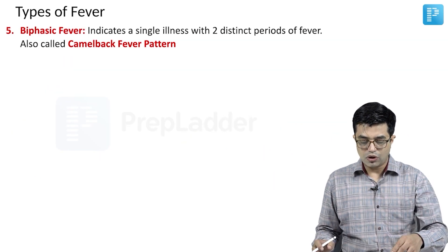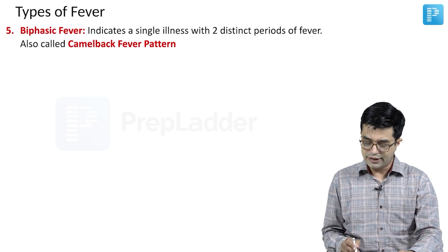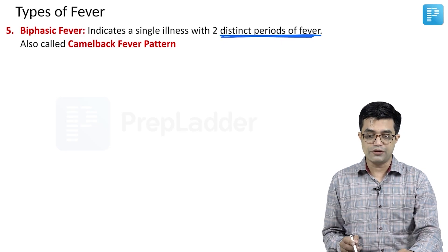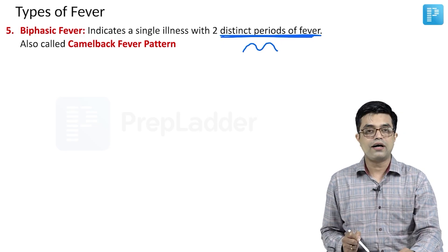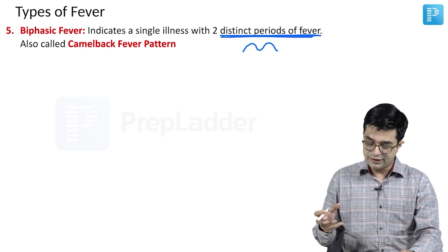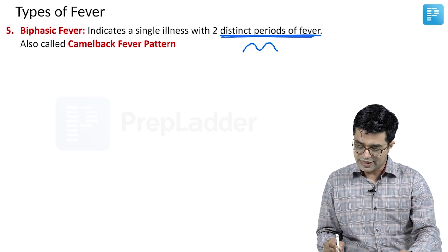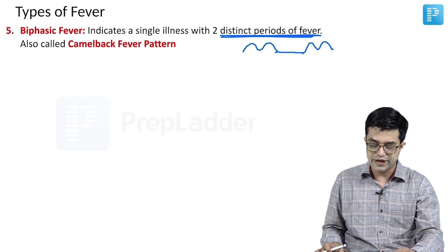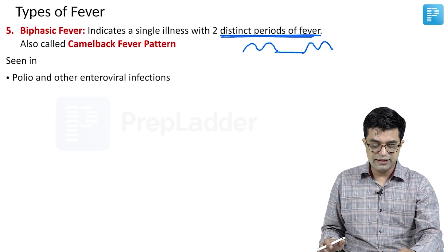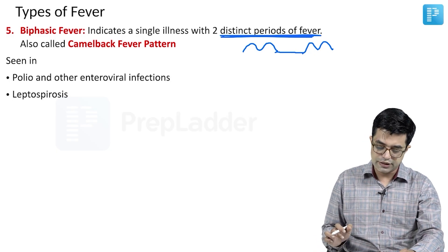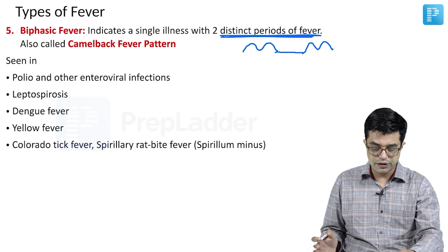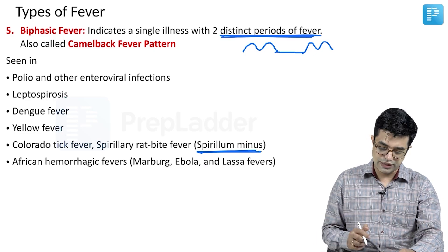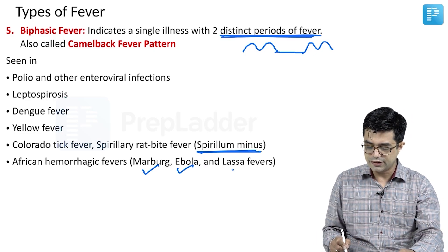Fifth is biphasic fever, which indicates a single illness with two distinct periods of fever. It is also called the camelback fever pattern — like a camel's hump, there will be two spikes of fever, and after a variable period, two more spikes occur. Biphasic fever is typically seen in poliomyelitis and other enteroviral infections, leptospirosis, dengue fever, yellow fever, Colorado tick fever, spirillary rat-bite fever caused by Spirillum minus, and African hemorrhagic fevers like Marburg, Ebola, and Lassa fever virus.